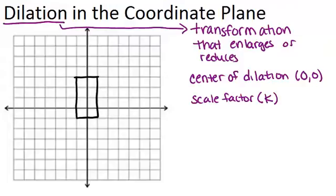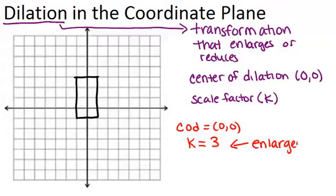In this example on the left, we are going to assume the center of dilation is (0,0), and the scale factor is going to be 3. And what we're going to do is dilate this rectangle. Now, if the scale factor is bigger than 1, as it is in this case, because it's 3, that means we're going to be enlarging the shape. Any time it's bigger than 1, you're getting bigger.